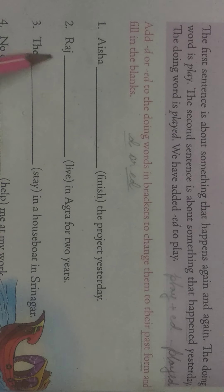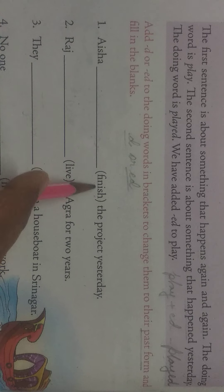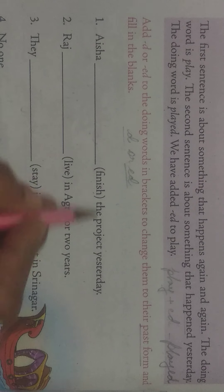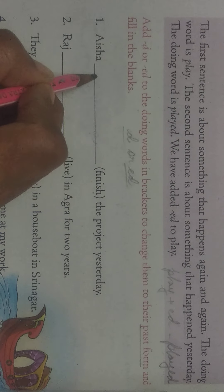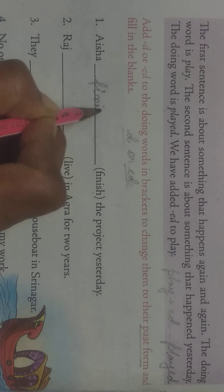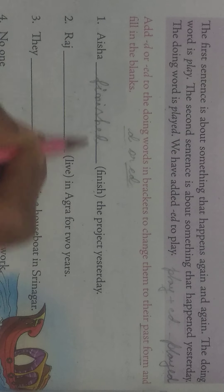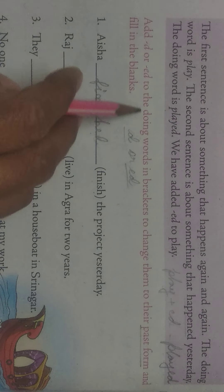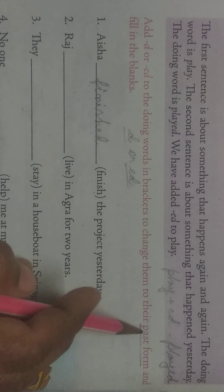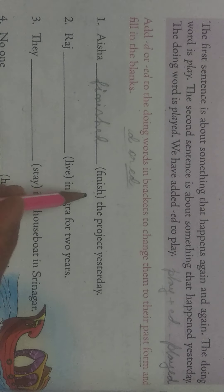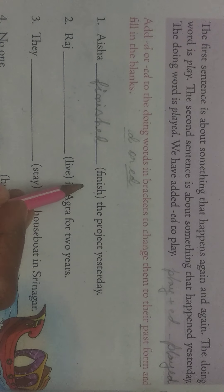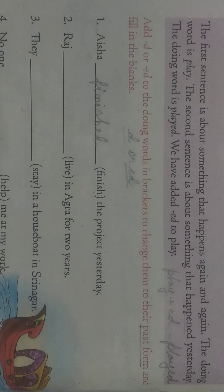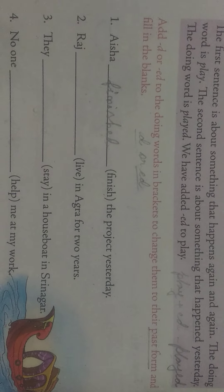So children, in this exercise you just add D or ED to the words and complete the sentences. For example: Aisha dash the project yesterday — here the word is finish, F-I-N-I-S-H, so you add ED to get finished, F-I-N-I-S-H-E-D. Add D or ED to the doing words in the brackets to change them to their past form and fill in the blanks. Change the present form verb to past form to complete the sentences. Please children, try this.